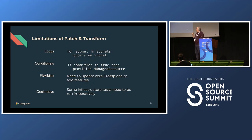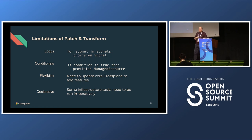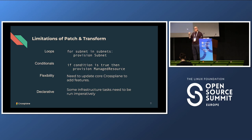There are some limitations with the current patch-and-transform approach. Kubernetes is a declarative system — we're declaring things in YAML. Loops are not something you can really do right now in patches and transforms. Conditionals too. The patch-and-transform engine is embedded in Crossplane source code, so to add a new hashing algorithm to a transform, you have to modify Crossplane itself and wait for a quarterly release. And there are times in infrastructure when we need to run things imperatively.